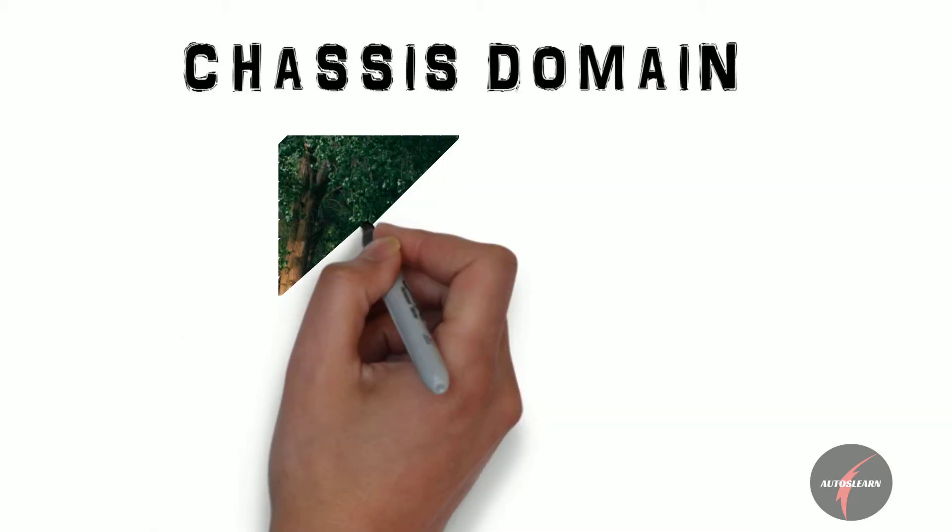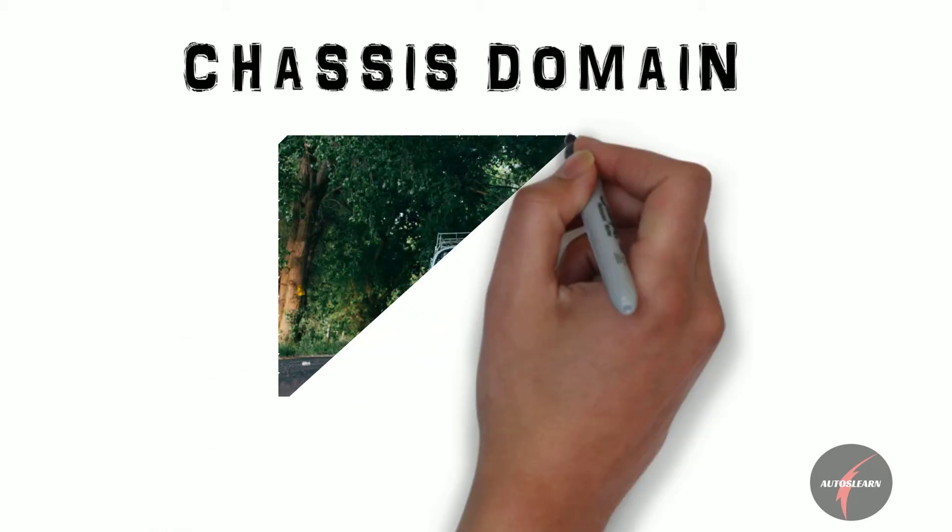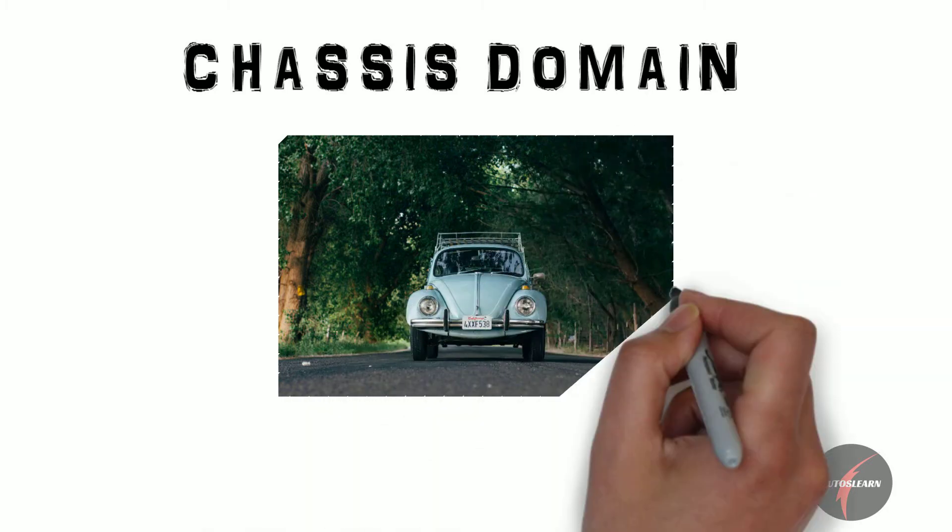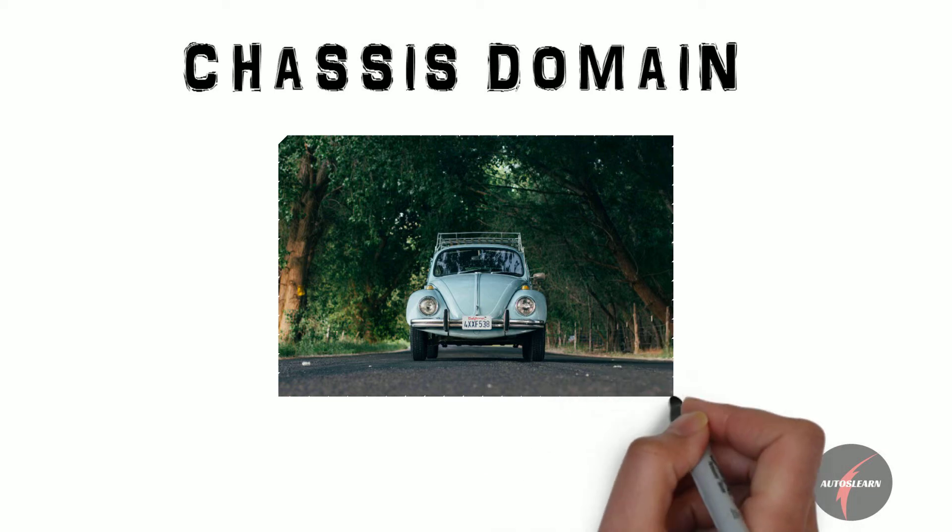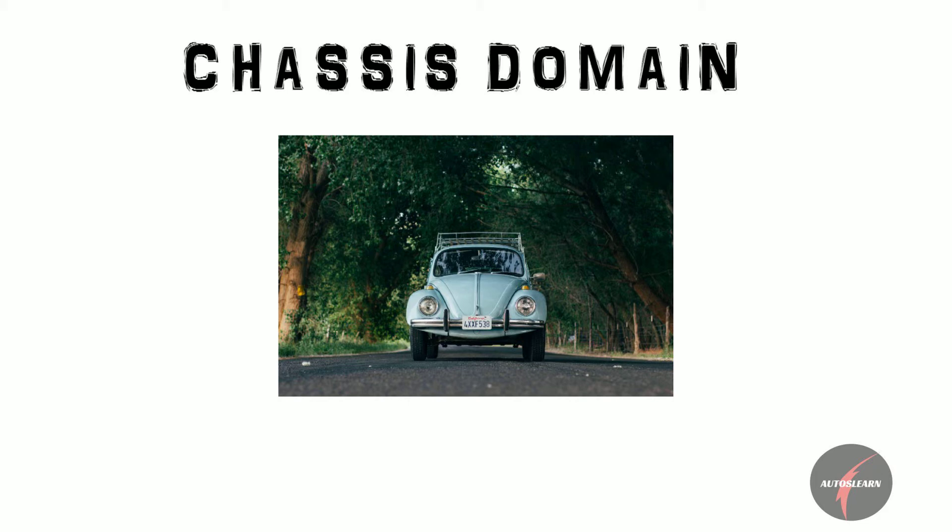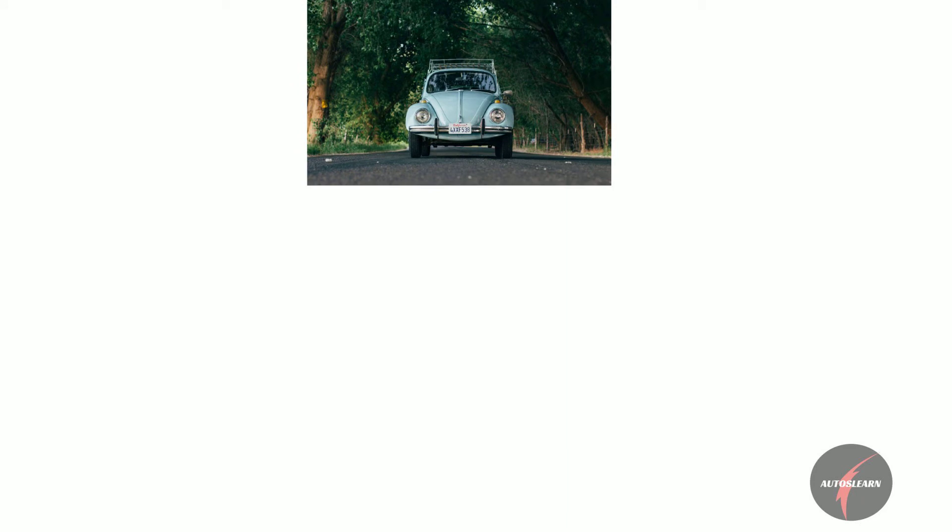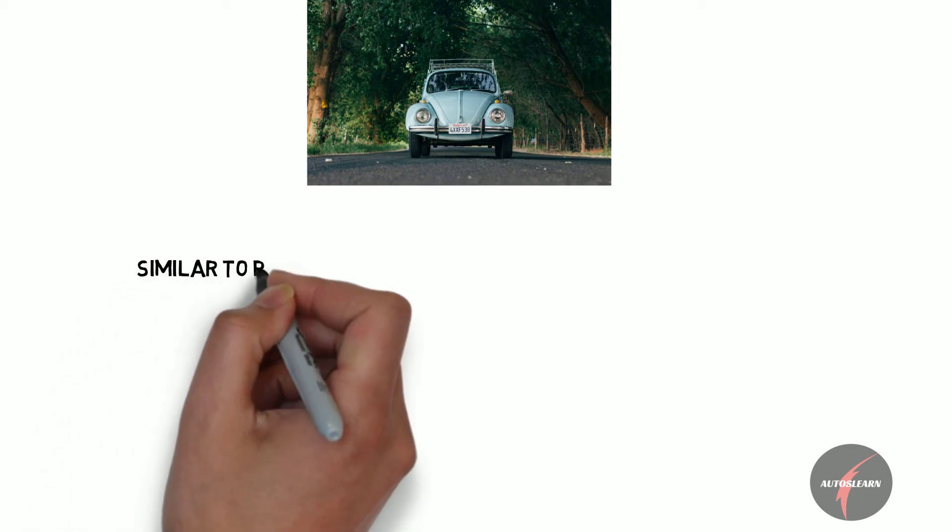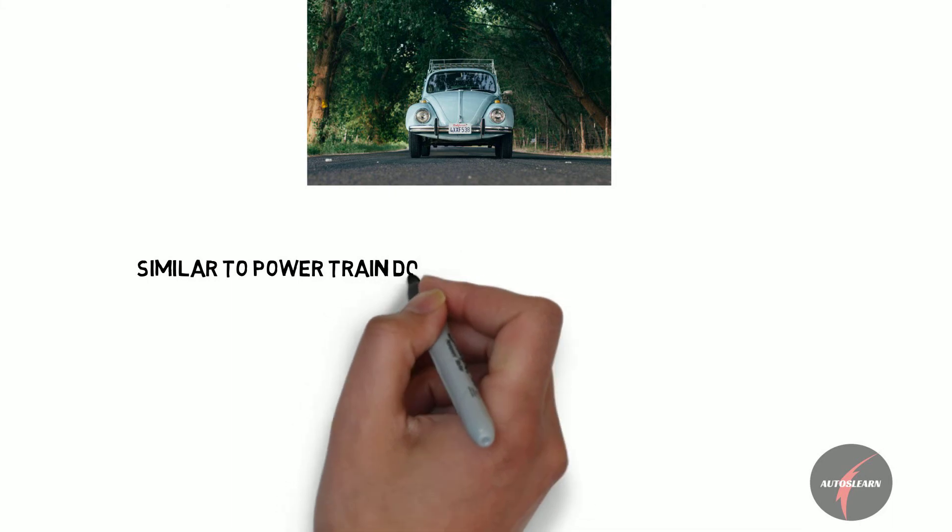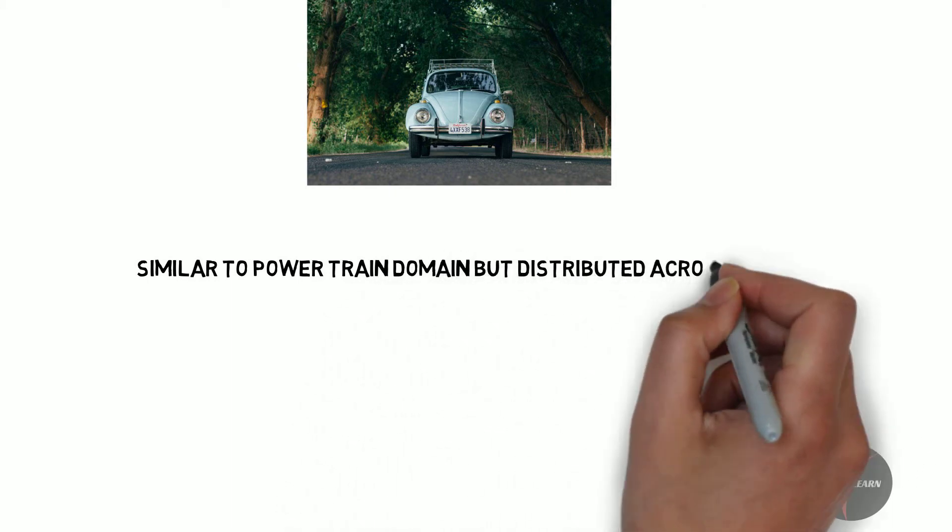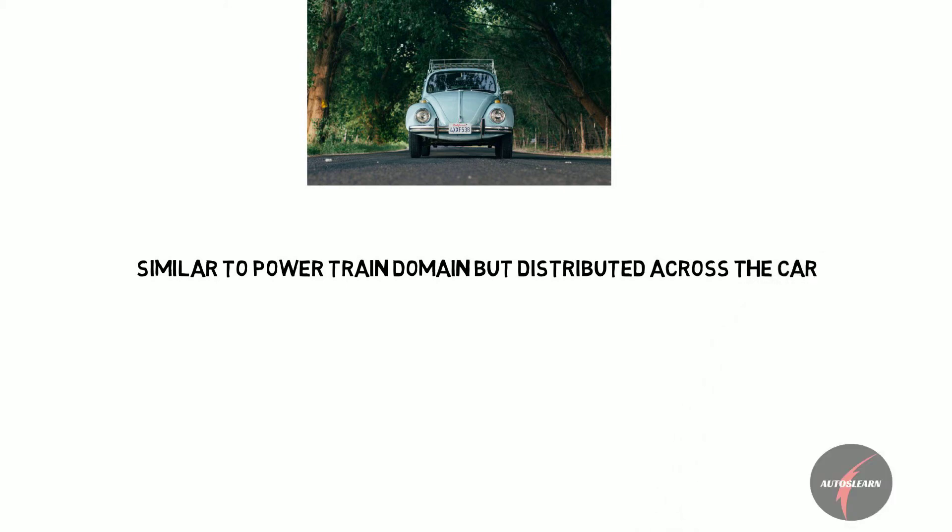Now let's go to the chassis domain. The aim of this domain is to control the interaction of the vehicle with the road. The controller uses this domain to take into account the request of the driver, the environment conditions, and the road profile. Underlying principles are almost similar to the powertrain domain such as the difference in the sampling time, the time constraints, etc. But compared to the powertrain domain, the chassis domain is distributed across the car.